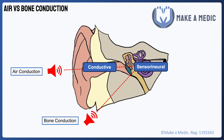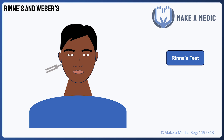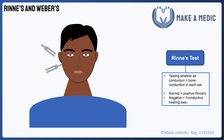In Rinne's test, you apply a vibrating tuning fork to the patient's mastoid bone and ask them to tell you when they can no longer hear the sound. Then you remove the fork from the bone, hold it one or two centimetres from the ear canal, and ask them if they can still hear the sound. In a healthy person, the inner ear is more sensitive to sound via air conduction than bone conduction, so they should continue to hear the sound when the fork is removed from the bone. This is a normal result, although it's confusingly called a positive Rinne's test. A negative Rinne's test, where bone conduction is better than air conduction, would suggest conductive hearing loss in the affected ear. But you can have false negative results, which is why we also perform Weber's test to confirm the issue.